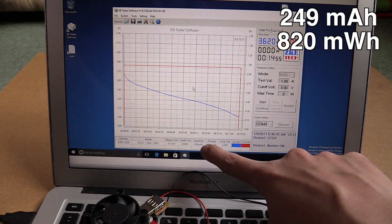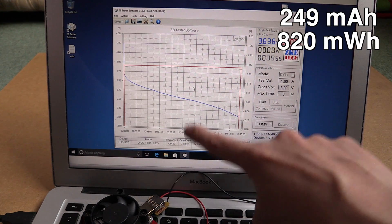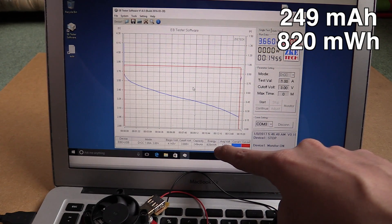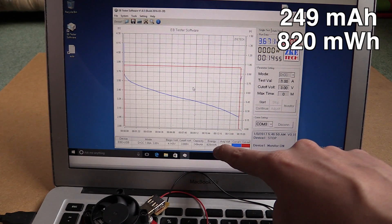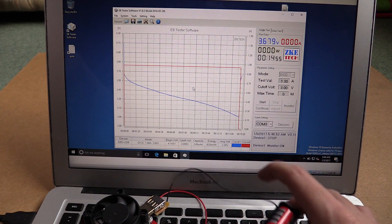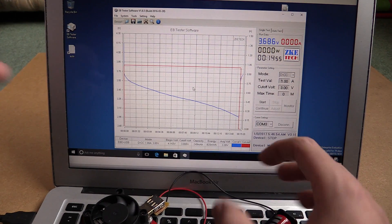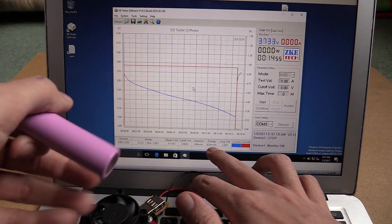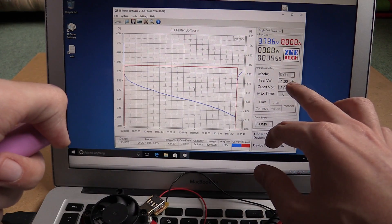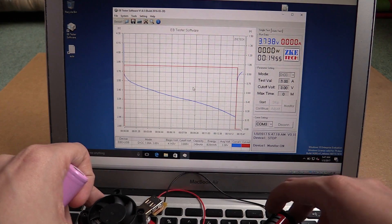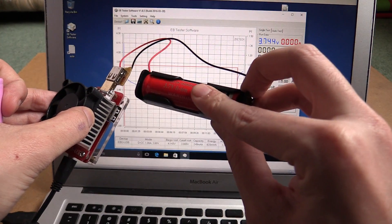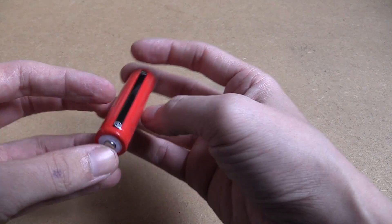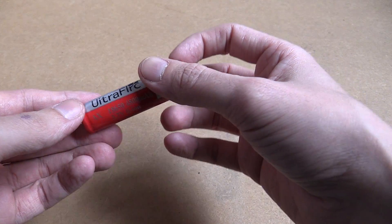So we only managed to draw out around 249 mAh, although you have to take into account the voltage, or 820 mW hour. Now, 820 mW hour is much less than I'd expect for such a high-capacity battery because when I did the same test with this Samsung battery, I pulled out over 6,400 mW hour, and that was at a higher current as well. So I think I might have been scammed, guys. I don't think this is a genuine 4,800 mAh battery at all.